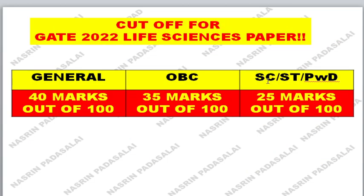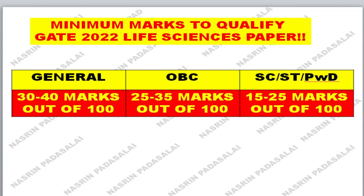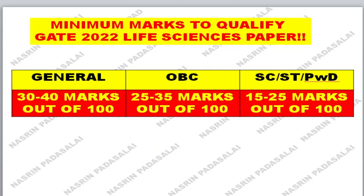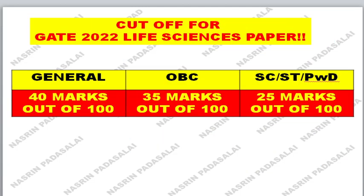For SC/ST and Persons with Disability, you should get 25 marks out of 100 based on my calculation. The highest SC/ST cutoff was reported in 2019, which was 24.5 marks. Above that, no higher cutoff has been reported for those categories.